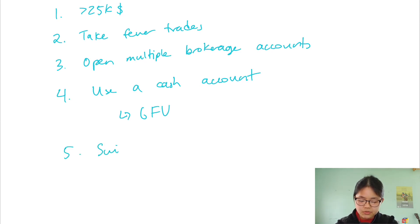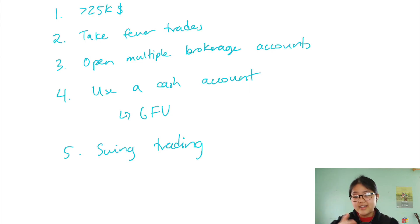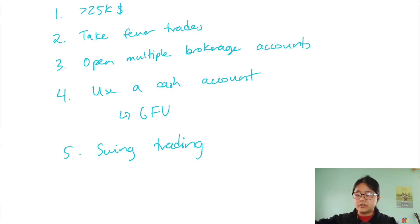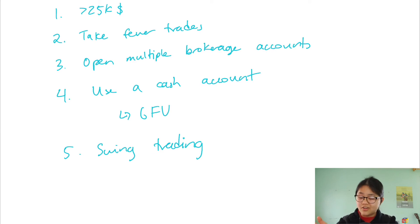Lastly, you can do what's called swing trading, because the PDT rule applies to day traders — buying and selling on the same day. Swing traders trade on a longer timeframe, holding for a week, a couple of weeks, or maybe even a couple of months, and those trades aren't counted as day trades. Anyway, that's what the PDT rule is, where it came from, and how you can get around it. I hope you learned something cool and I'll see you in the next video.